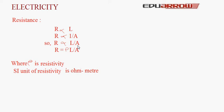Removing the sign of proportionality and taking a constant, R is equal to Rho·L upon A. Rho is the constant of proportionality known as resistivity, denoted by this symbol. The SI unit of resistivity is ohm-meter.